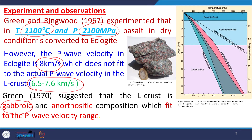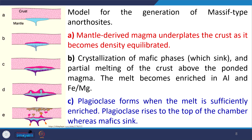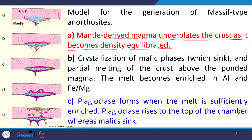Green in 1970 suggested that the lower crust is of gabbroic and anorthositic composition, which fits the P wave velocity. He proposed a model in which mantle-derived magma underplates the crust as it becomes density-equilibrated. A magmatic supply from the mantle comes and gets underplated at the lower part of the crust.